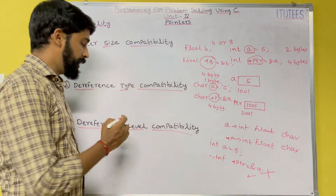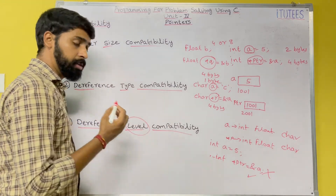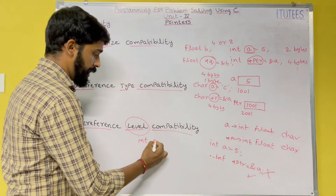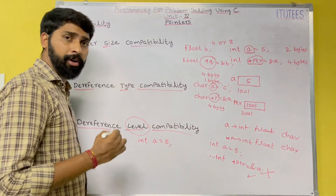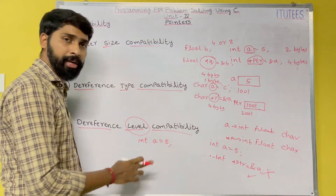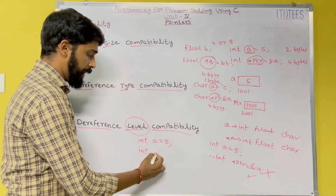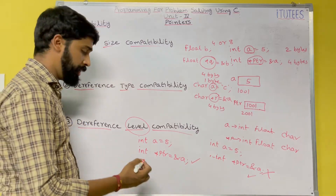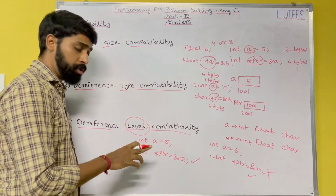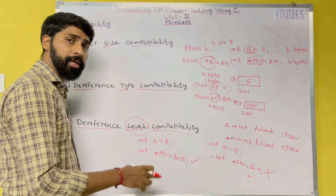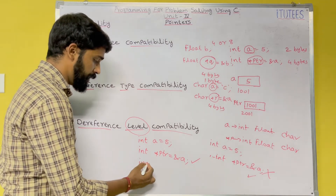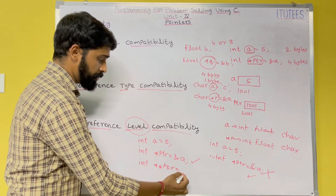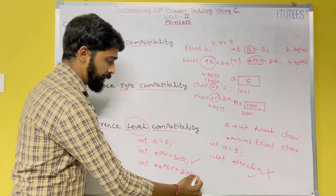Next is dereference level compatibility. Level means you are going to create a pointer to pointer. For example: int a equals to five. I want to store the address of a in a pointer, so I use int* ptrA equals to ampersand a — this is correct. And if I want to store the address of ptrA in another pointer-to-pointer, I can use int** pqr equals to ampersand ptrA — this is also okay.